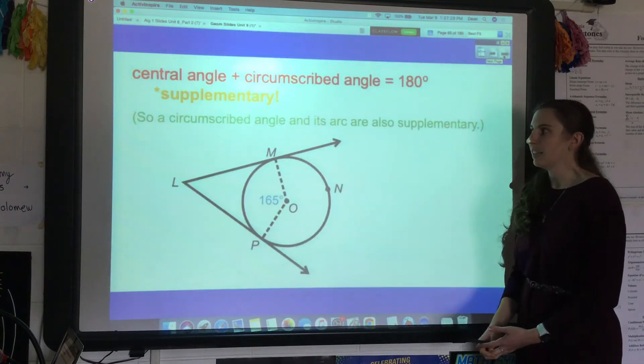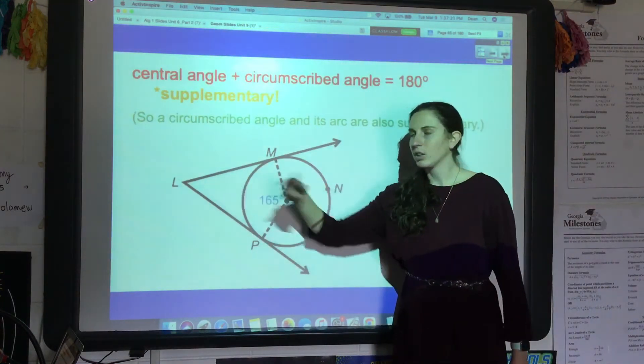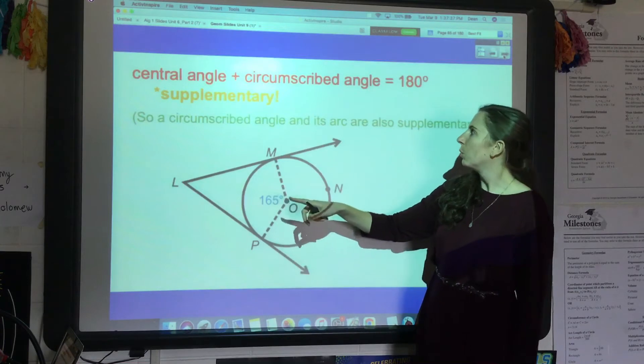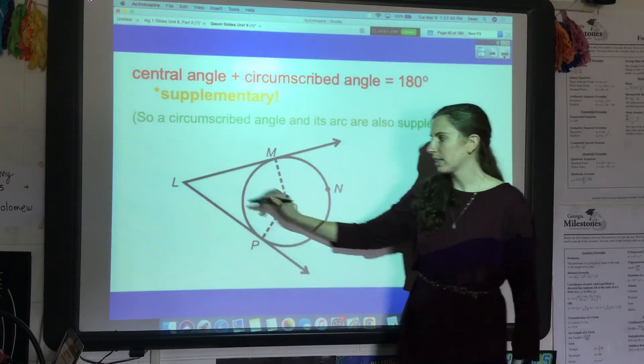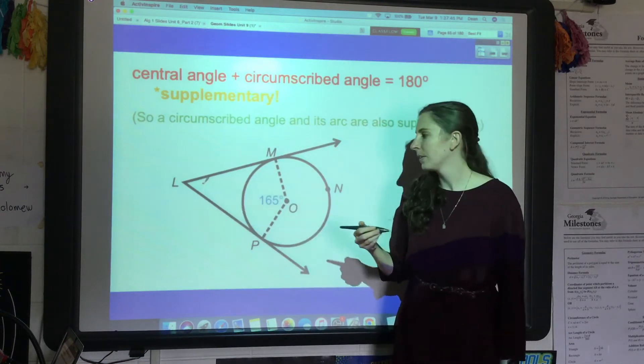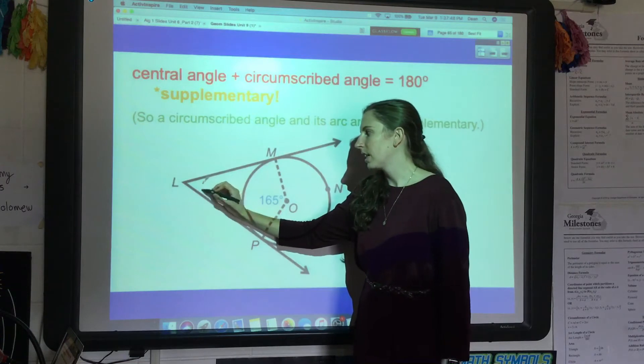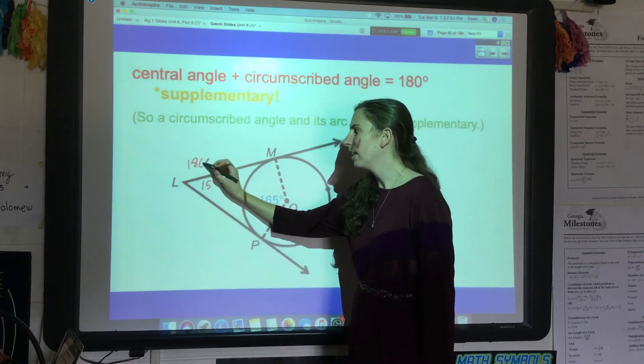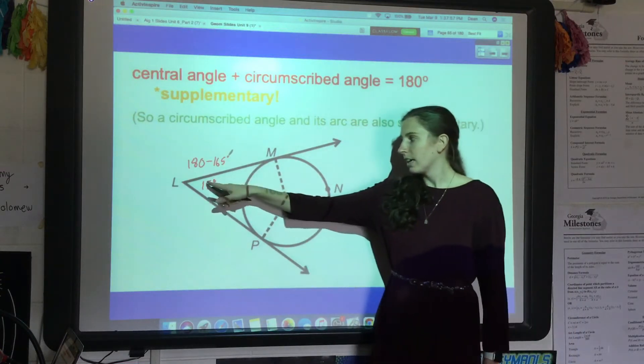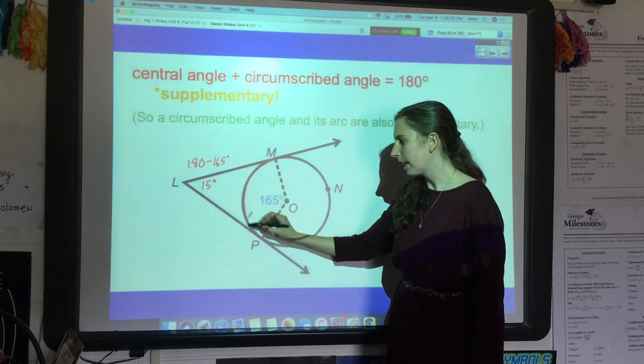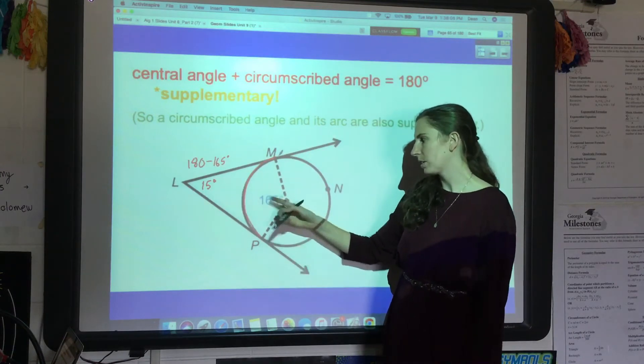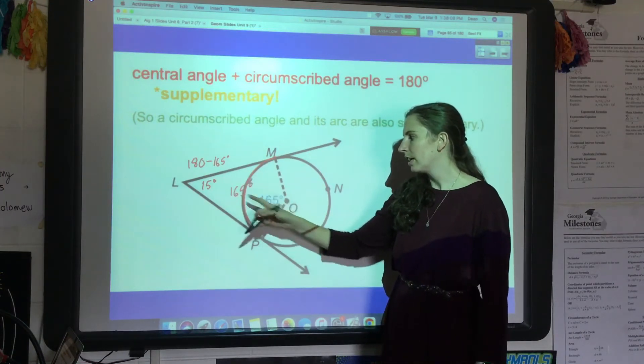A circumscribed angle always adds up to 180 with the central angle. So basically these two add up to 180, or are supplementary. If this is 165 degrees, then this is going to be 15 degrees because that's 180 minus 165. Keep in mind that means the circumscribed angle and the arc that it touches are also supplementary, because if that's 165, this is also 165. So these two should also add up to 180.